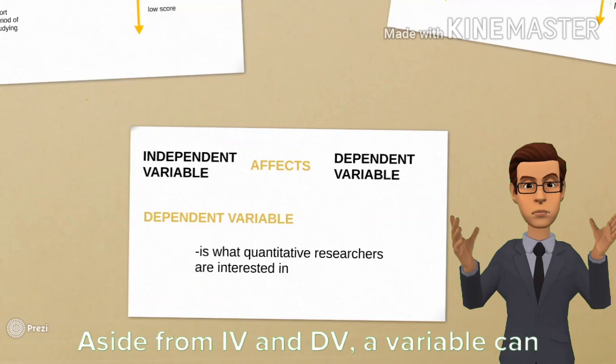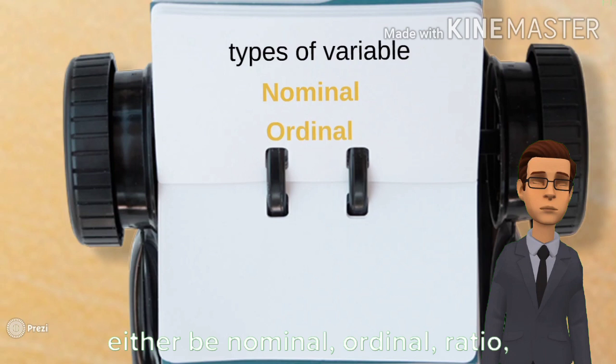Aside from IV and DV, a variable can either be nominal, ordinal, ratio, or interval.